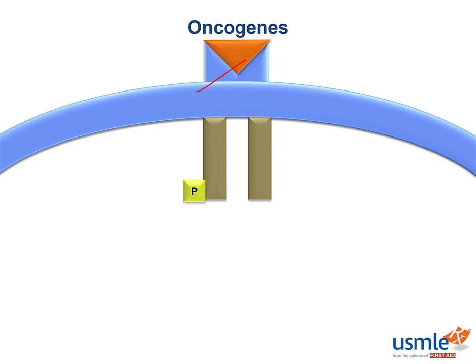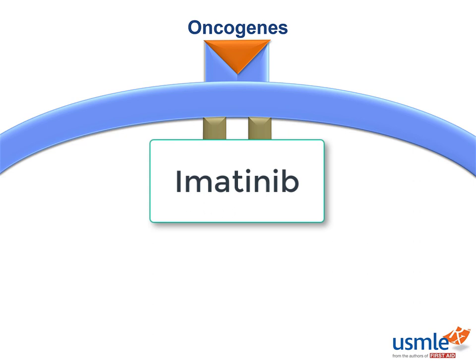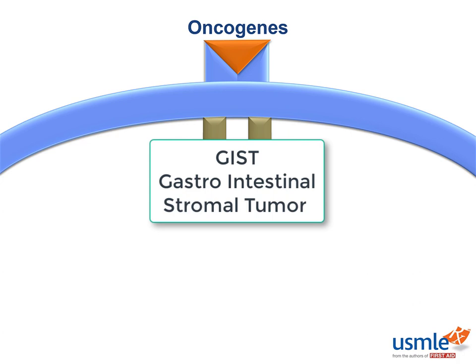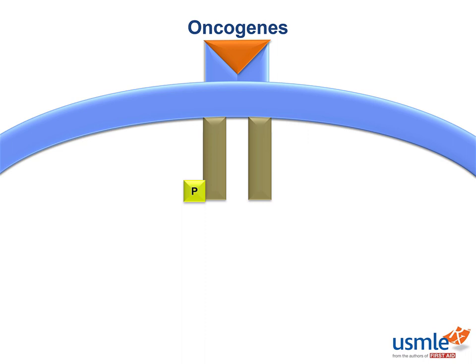Essentially, the BCR-ABL fusion is always active — it doesn't need any stimulation from the receptor itself. This is very commonly tested on the USMLE. The drug that targets this receptor is imatinib. Imatinib is also used to treat gastrointestinal stromal tumor, or GIST, because a mutation in what's called c-KIT causes constitutive tyrosine kinase activity, and imatinib blocks that receptor. Think of imatinib for CML and imatinib for GIST.